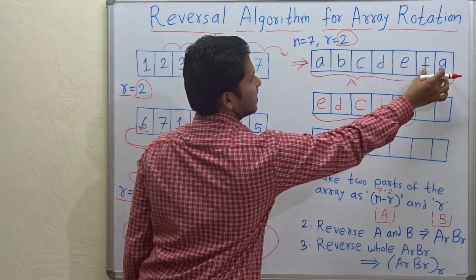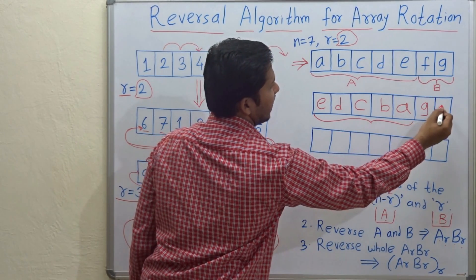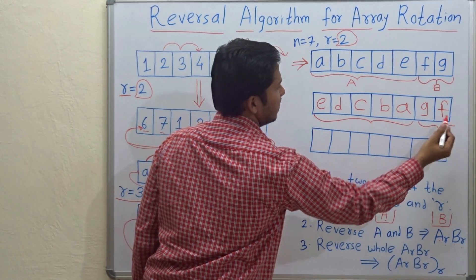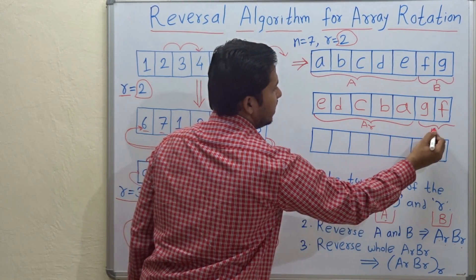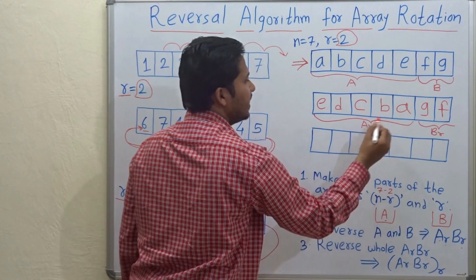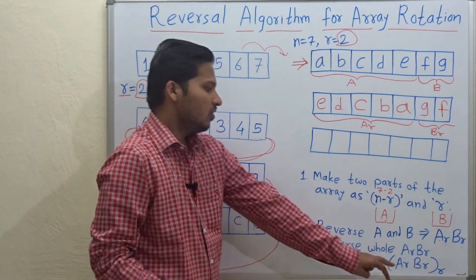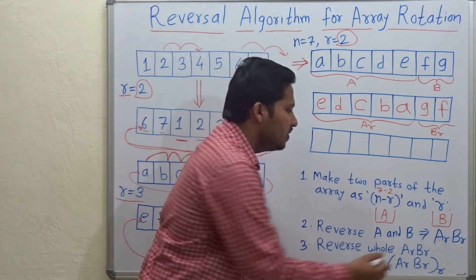Let's reverse the second part that is G and F. Okay. This is the second part. Now this is called as AR and BR means A reversed and B reversed. Okay. So we formed AR BR.